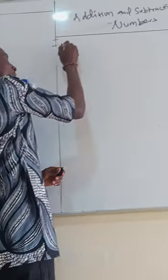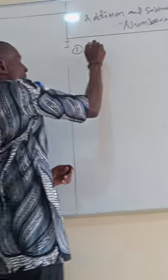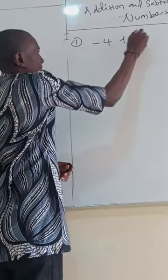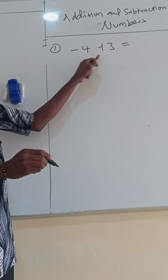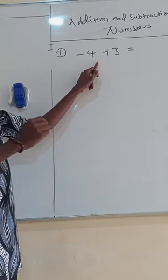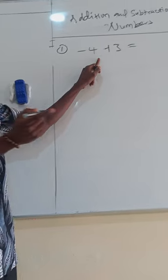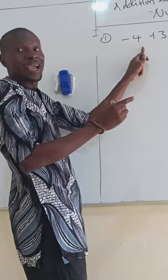Listen. Number 1, when you have minus 4 plus 3, you check - you have minus, you have plus here. Which of the signs has the biggest number or the highest number? You can see that minus is having the highest number.